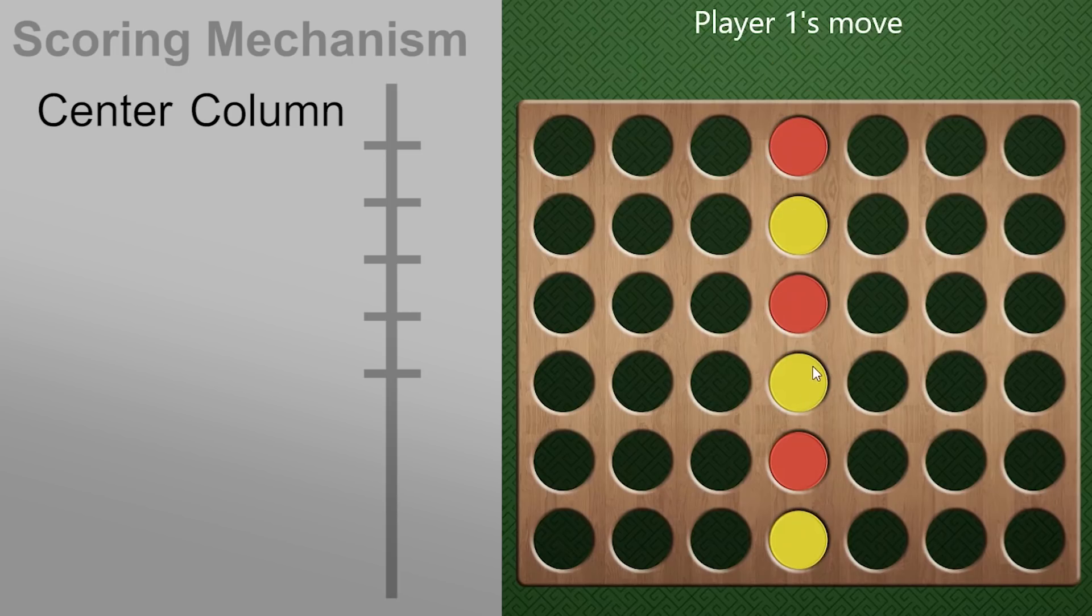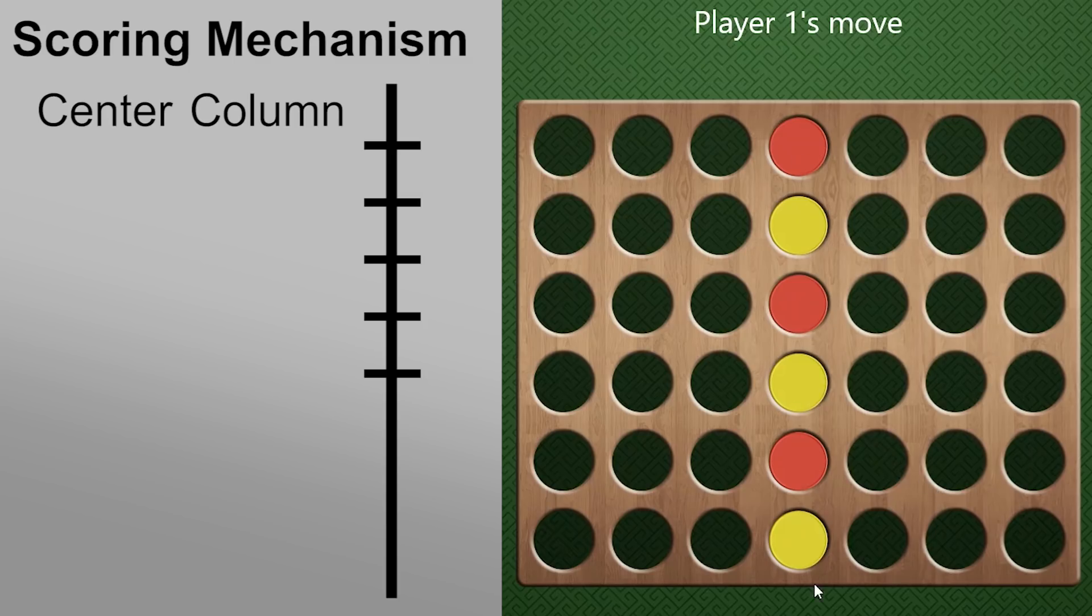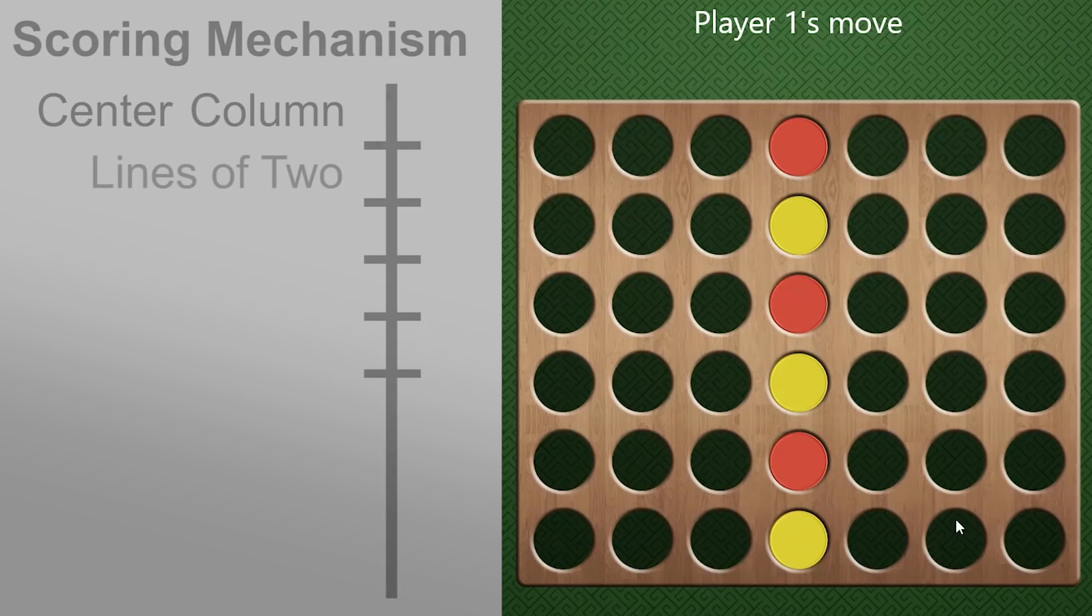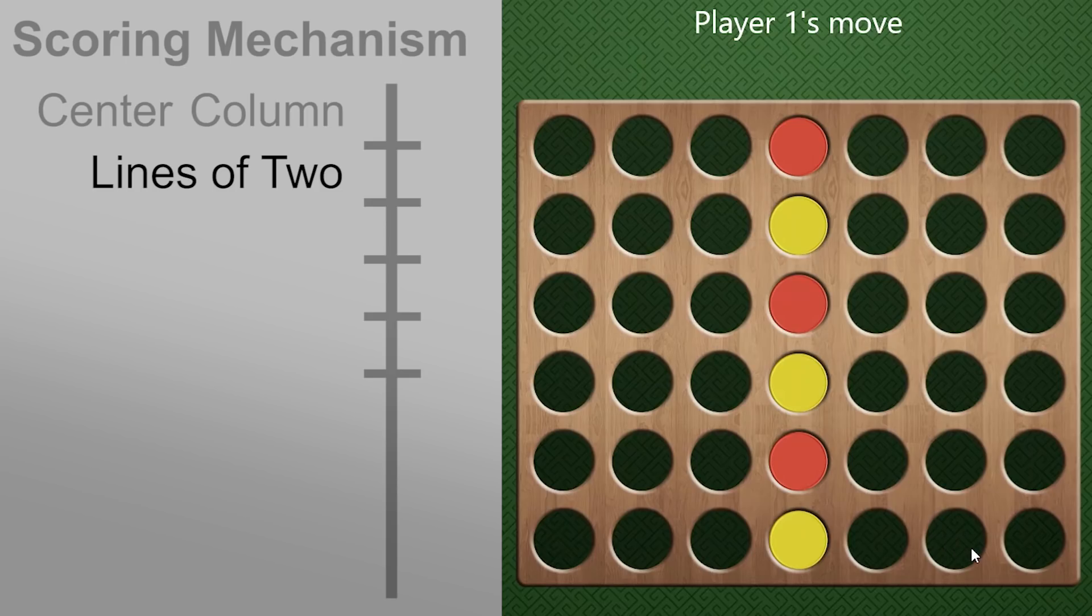Same reasoning for the third move. And now that I filled up the center column, I'm thinking about connecting lines of pieces together. So I like putting my piece right in here because that gives me a horizontal line of two pieces and a diagonal line of two pieces.